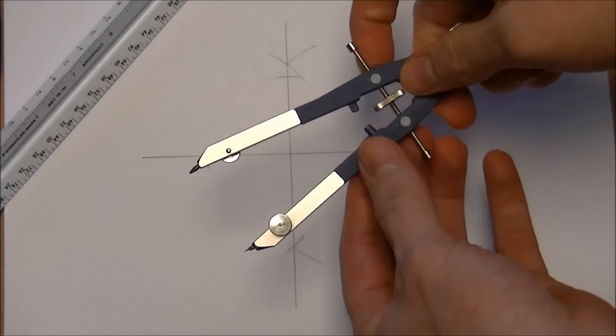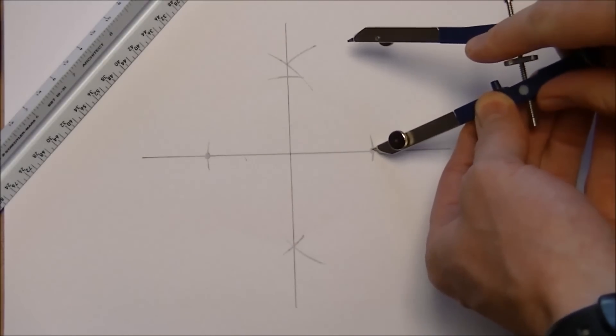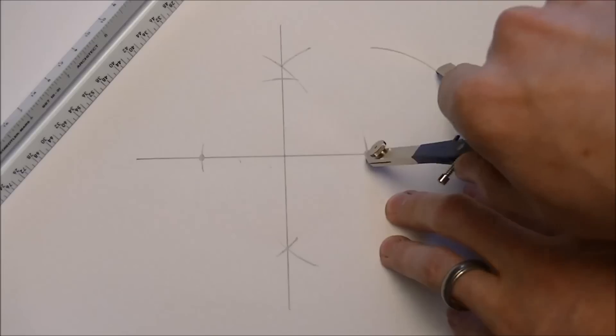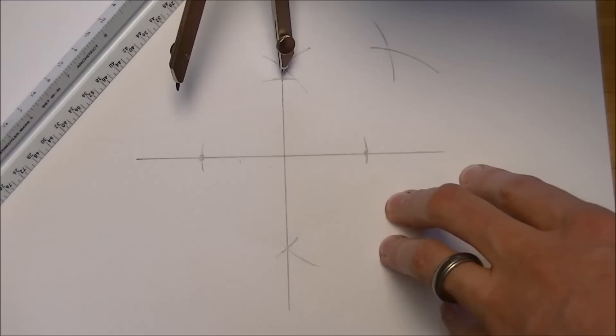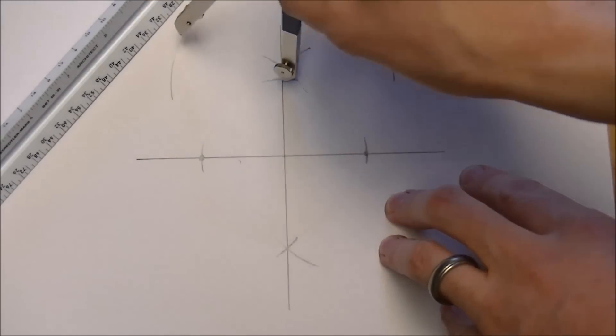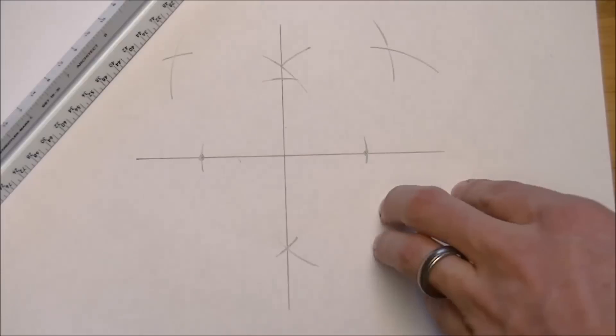Then again, I separate my compass so that it's a little bit bigger, and I move out from those points and make a mark up and down, so that I have some intersecting points.